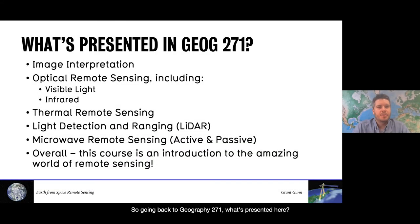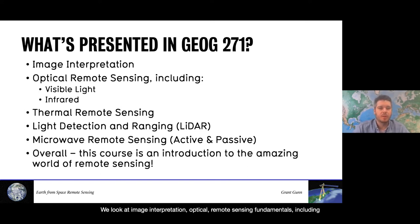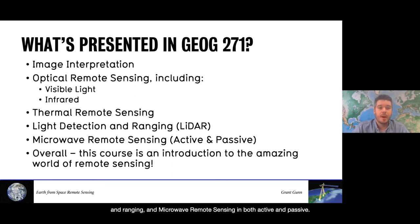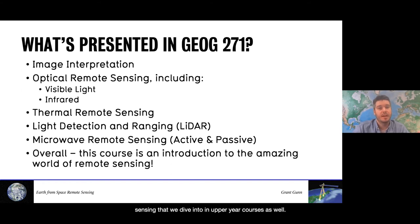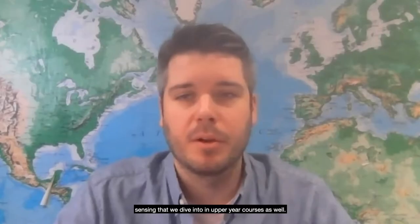Going back to Geography 271 — what's presented here? We have six main topics: image interpretation, optical remote sensing fundamentals including visible light and infrared, thermal remote sensing, light detection and ranging, and microwave remote sensing in both active and passive. Overall, this course is an introduction to the amazing world of remote sensing that we dive deeper into in upper year courses as well.